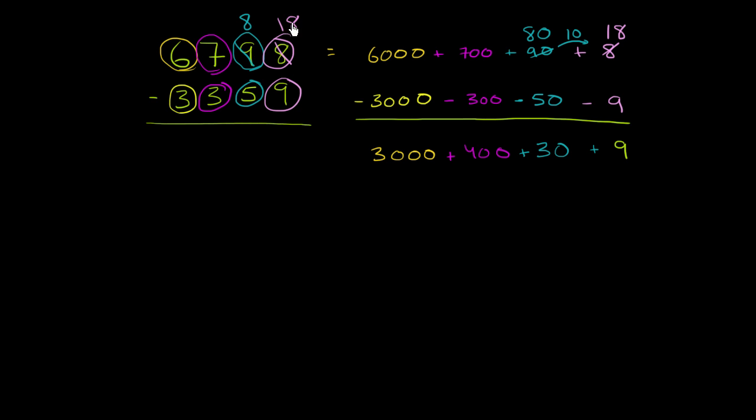And now you can subtract. 18 minus 9 is 9. 8 minus 5 is 3. 7 minus 3 is 4. 6 minus 3 is 3. 3,439.